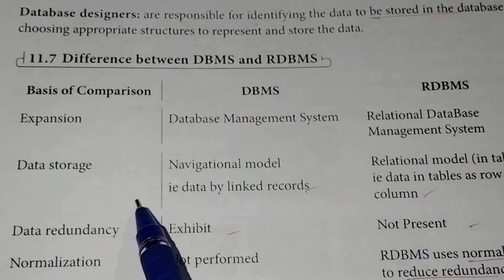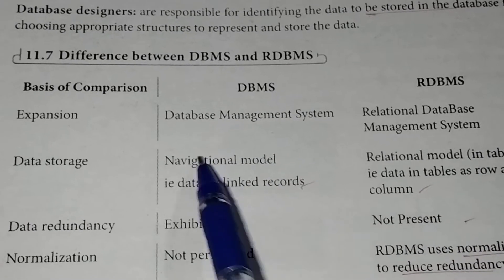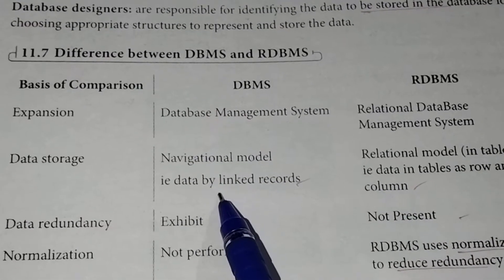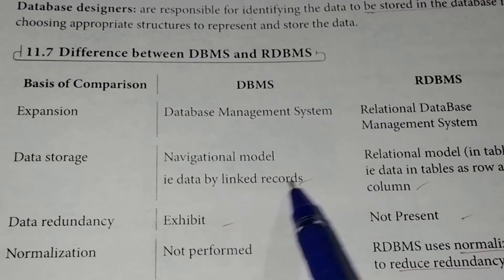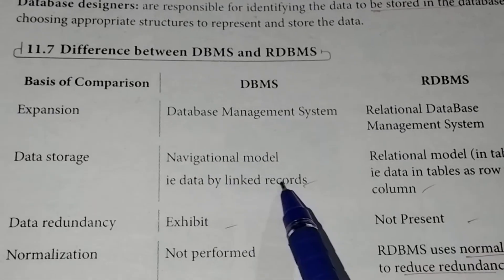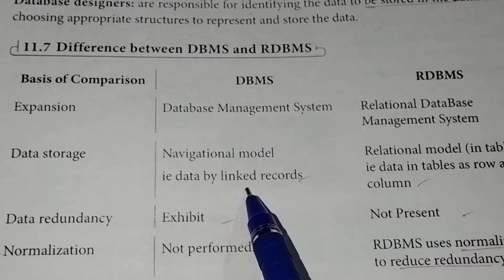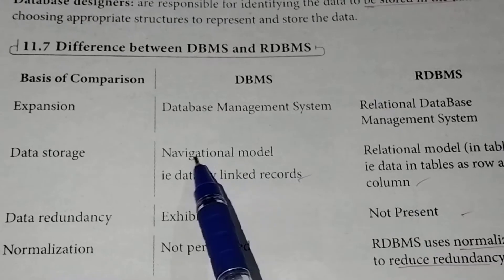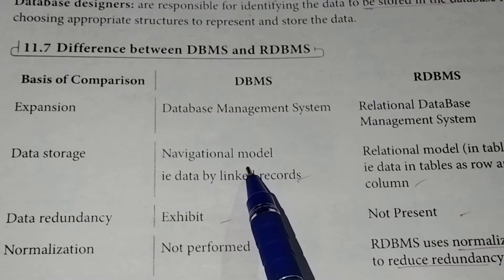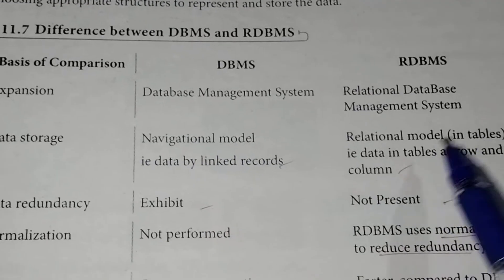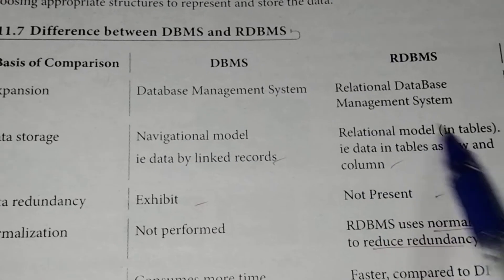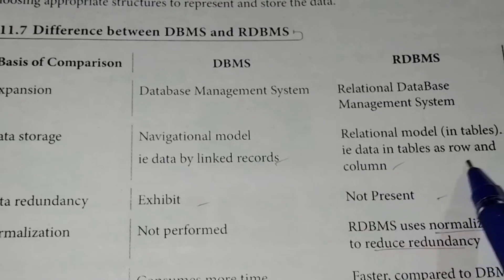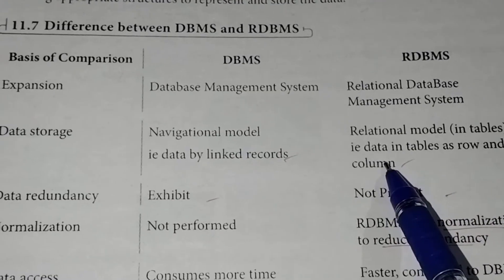In DBMS, data storage uses the navigation model — data is stored by linked records. In RDBMS, this is the relational model: data is stored in tables as rows and columns.